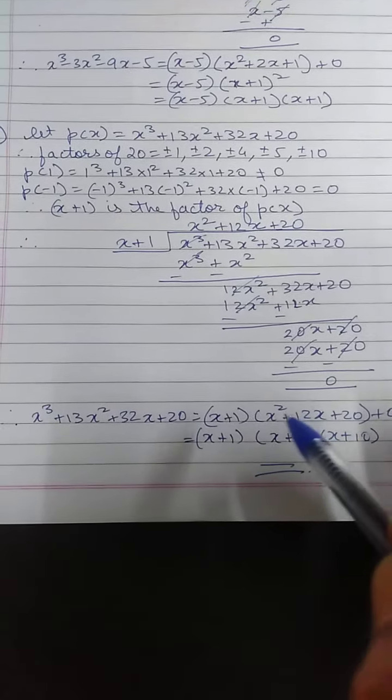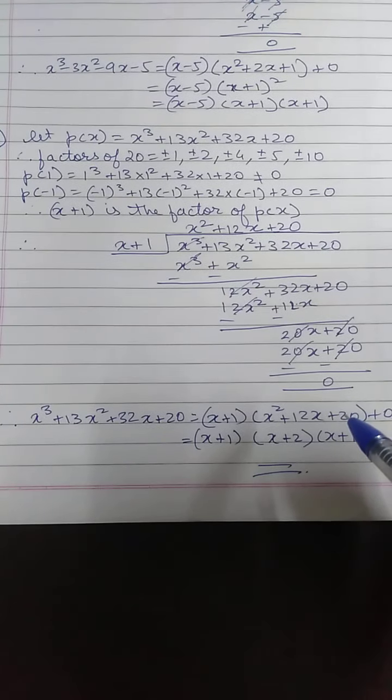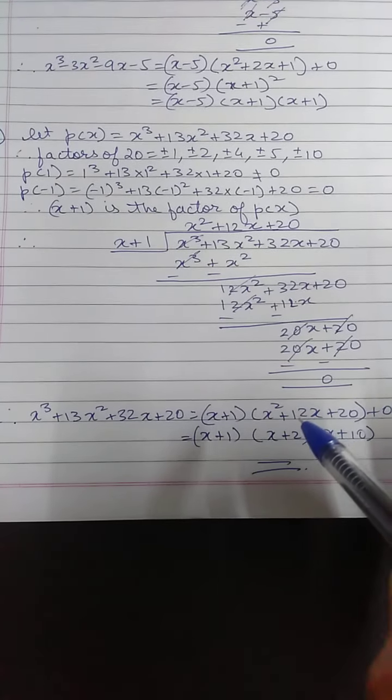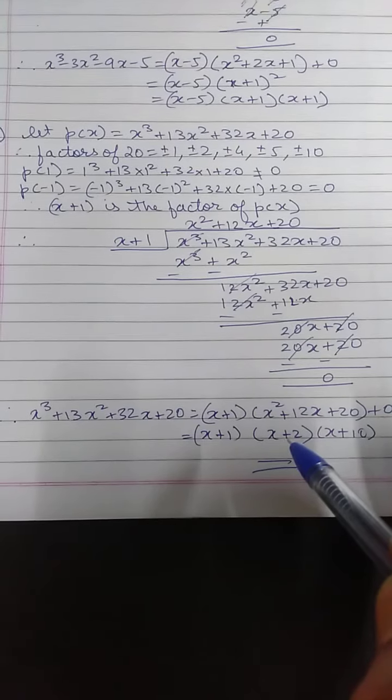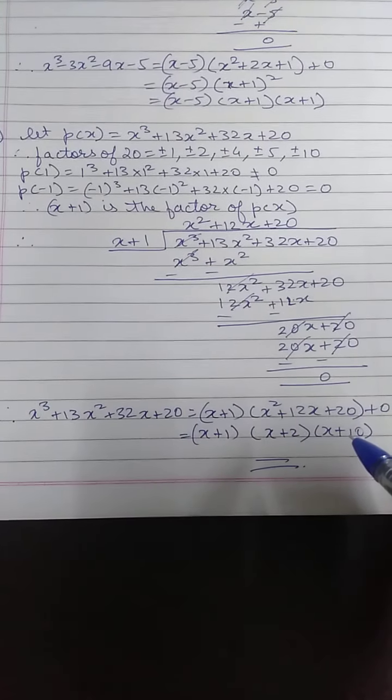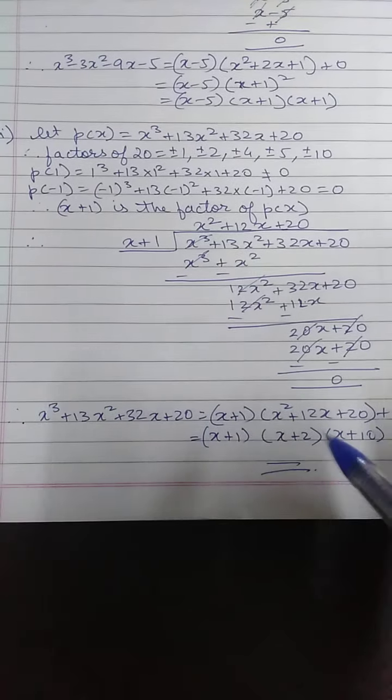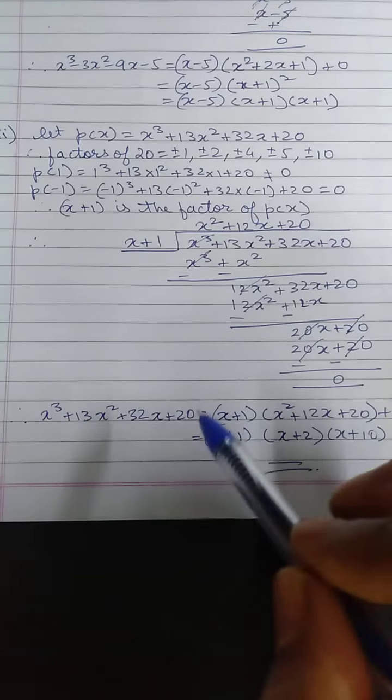In this quotient which is the quadratic polynomial now, you split the middle term to find two factors. Those two factors in this case is x plus 2 and x plus 10. Now these are the three factors for my polynomial. So this is how it is done.